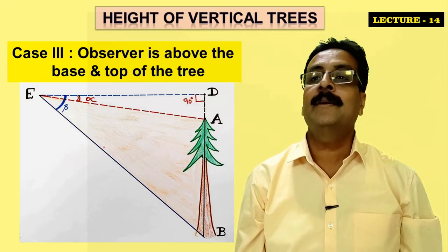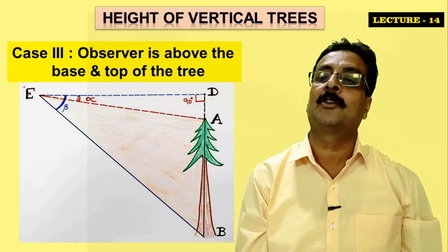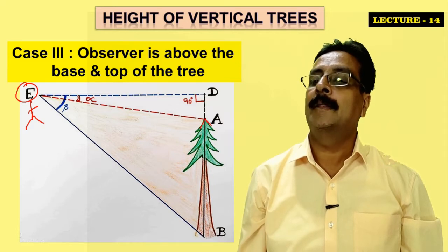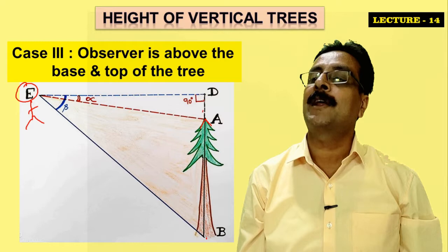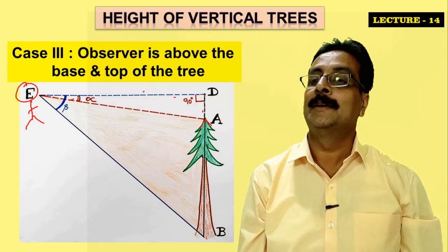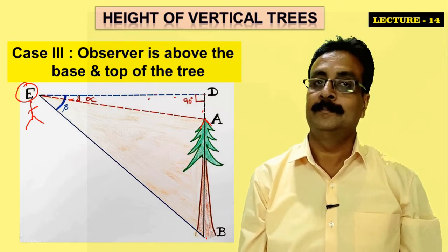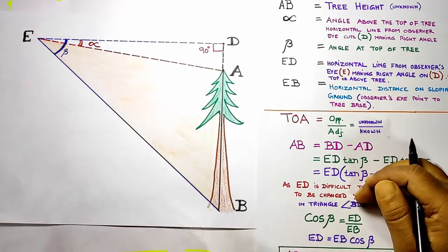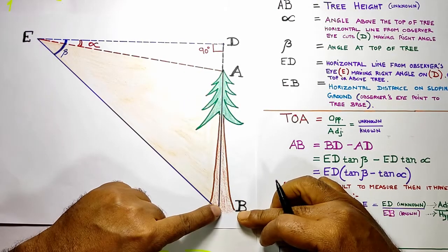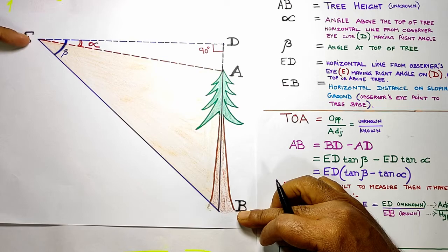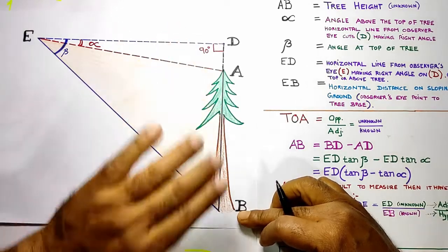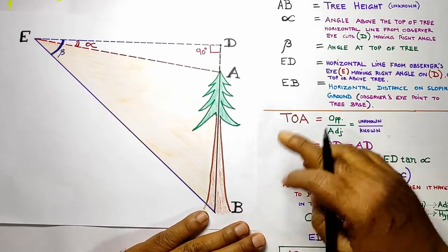Case 3: the observer is above both the base and the top of the tree. The top is lower than the observer and the base is even lower. Here, it is again difficult to measure ED. This is a vertical tree, but now the observer is positioned above where both the top and the base of the tree are below the eye level. Again, we use tangent since it is a vertical tree, and we draw an imaginary horizontal line from E.